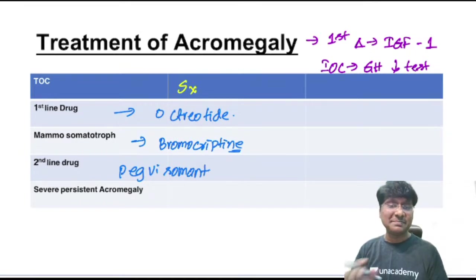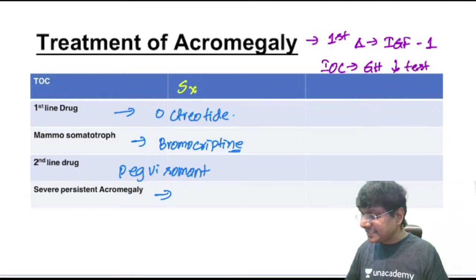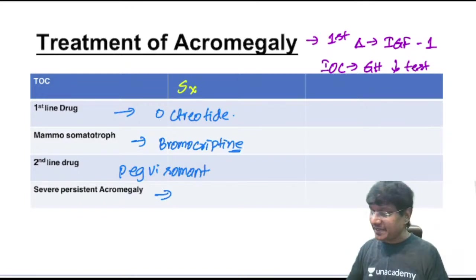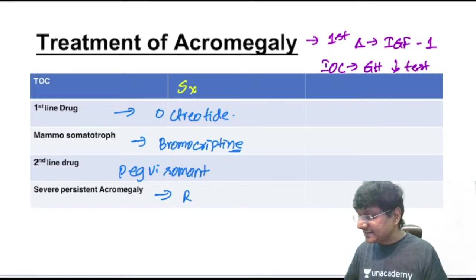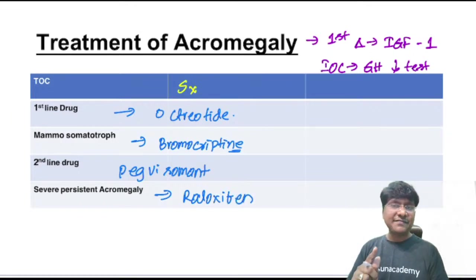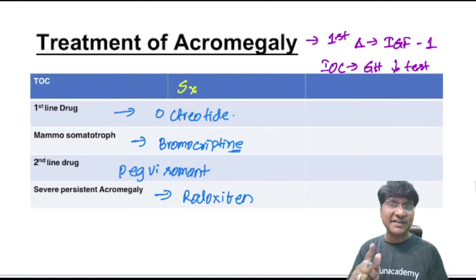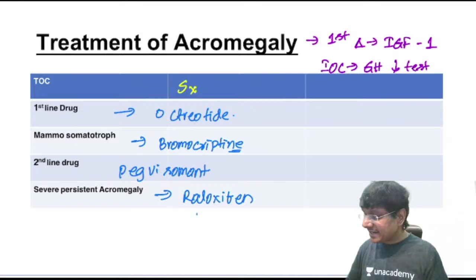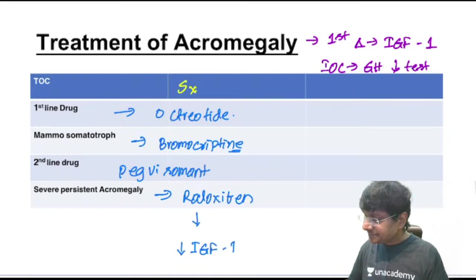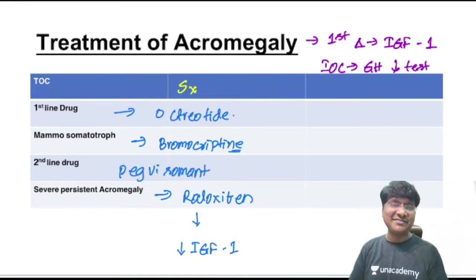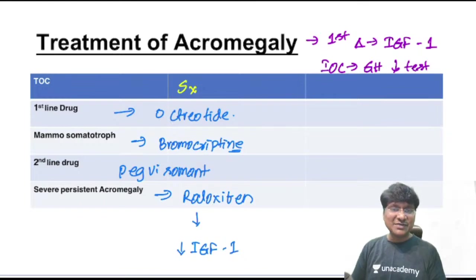Second line drug for acromegaly is pegvisomant — an endogenic growth hormone receptor antagonist. For severe persistent acromegaly, raloxifene is used. Raloxifene does not reduce growth hormone levels, but it normalizes IGF-1 levels.